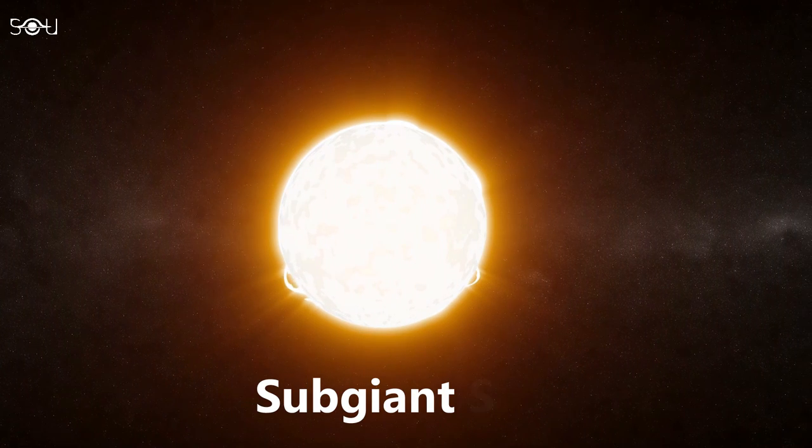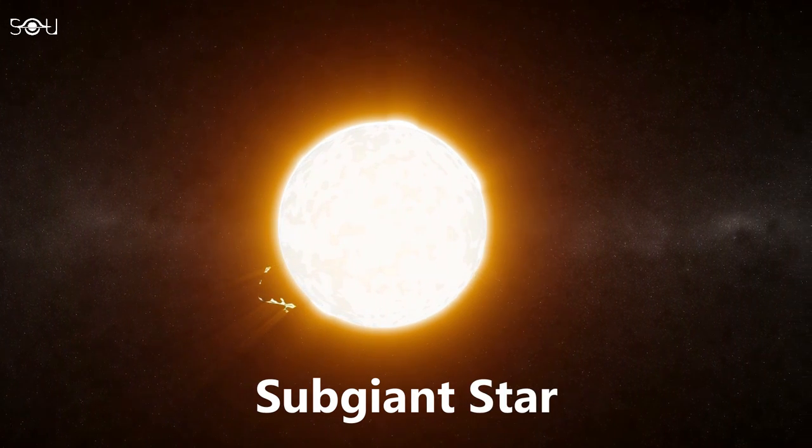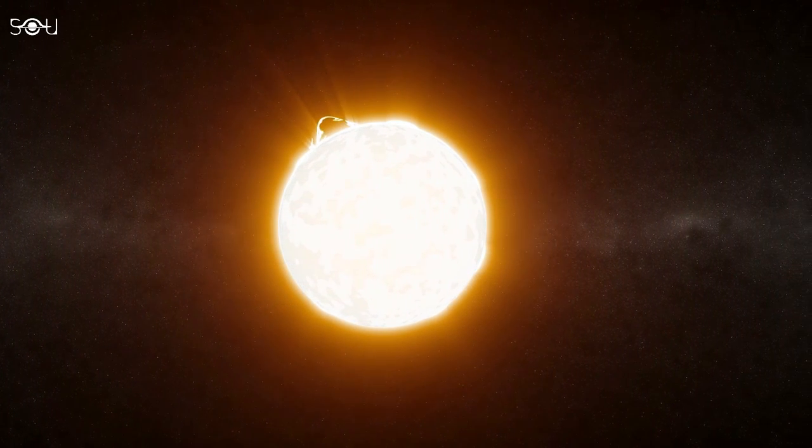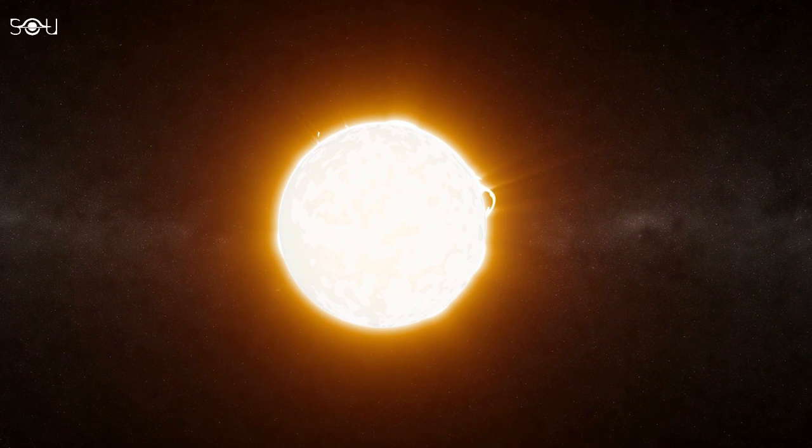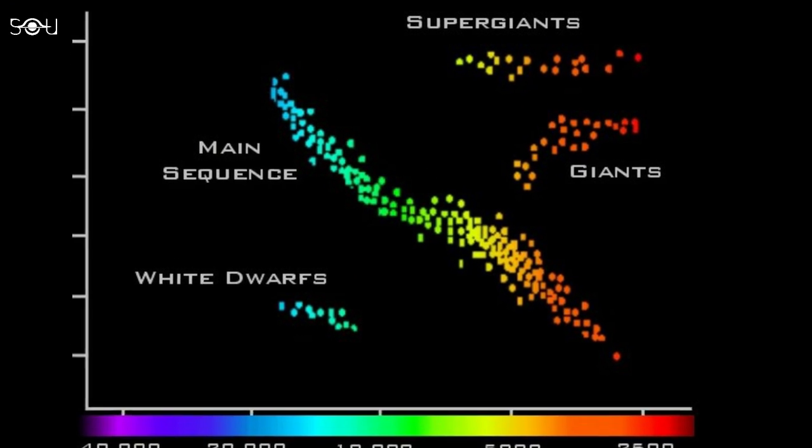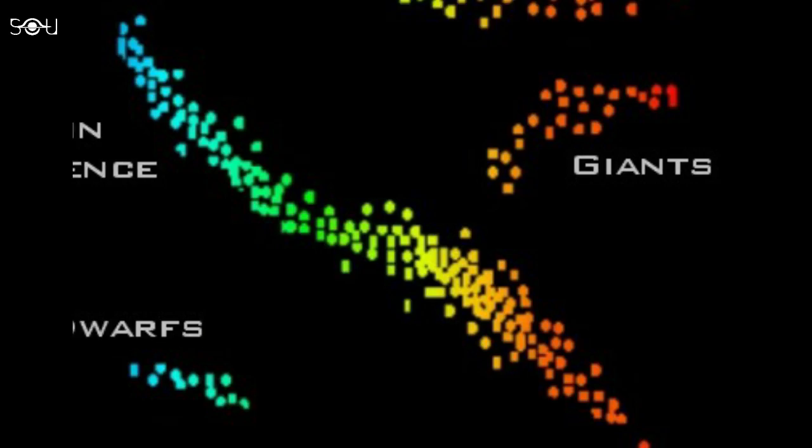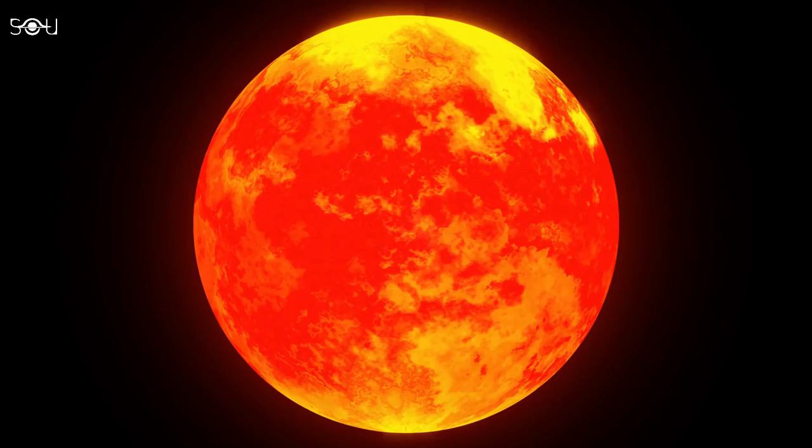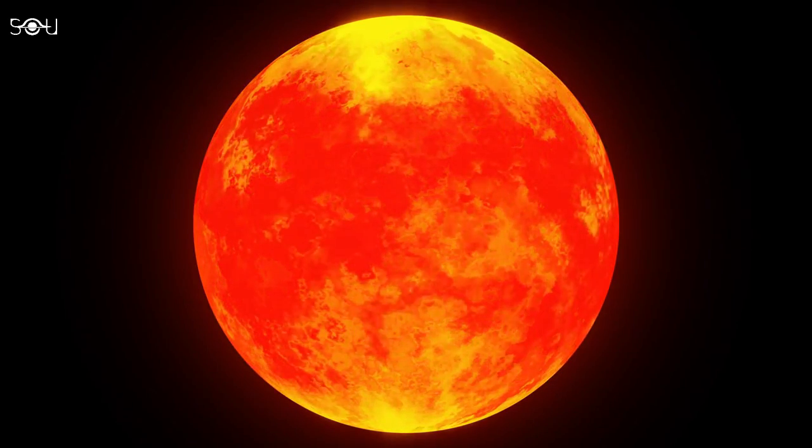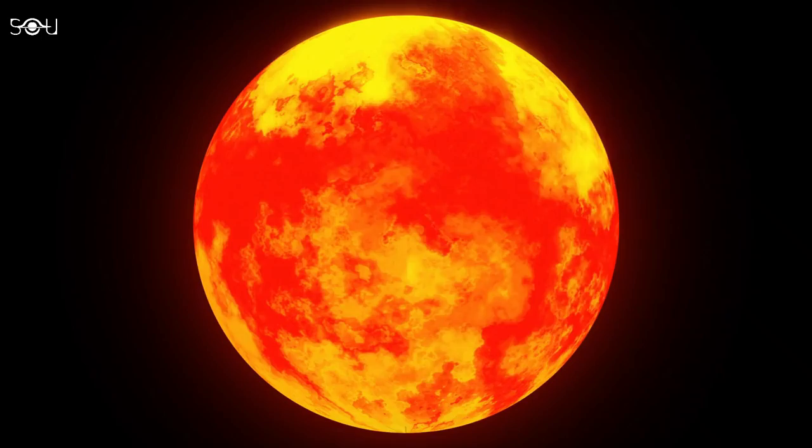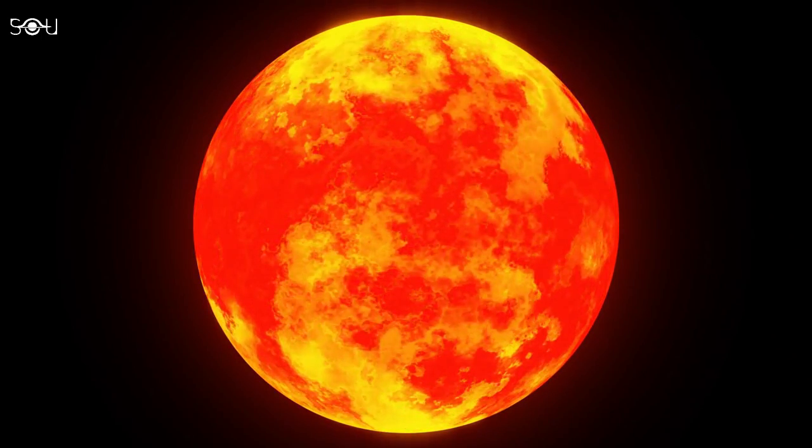HD140283 is a subgiant star. This means, unlike our sun, it isn't burning hydrogen into helium in its core. So it is neither on the main sequence nor on a red giant branch of Hertzsprung-Russell diagram. It has roughly the same mass and temperature as that of the sun, but has twice the radius and four times the luminosity.